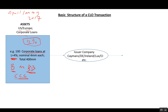The special purpose company is typically set up in the Cayman Islands or Delaware for US loans, or in Ireland, Luxembourg, or the Channel Islands for European loans. Nearly all CLOs are either US CLOs denominated in US dollars or European CLOs denominated in euros. This vehicle is set up in a tax-neutral jurisdiction — specifically one without withholding tax — so that investors domiciled all over the world pay tax in their own jurisdictions.